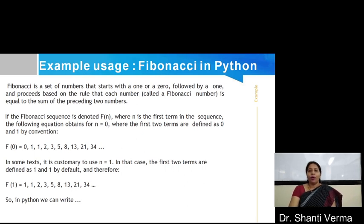So, if the Fibonacci sequence is denoted as F(n), where n is the first term in the sequence, the following equation obtains for n equals 0 where the first two numbers are defined as 0 and 1.